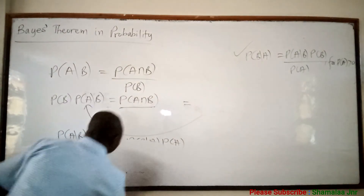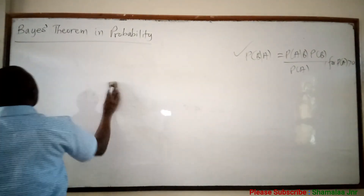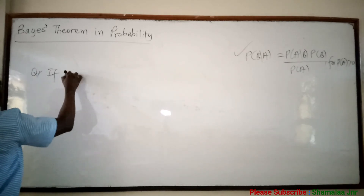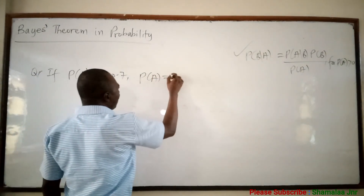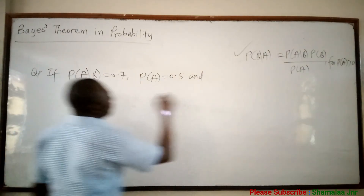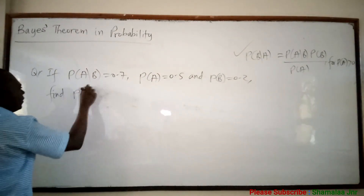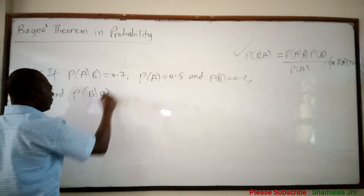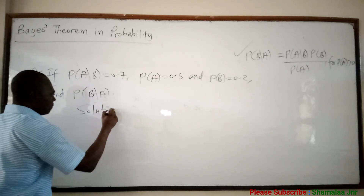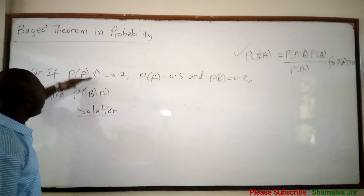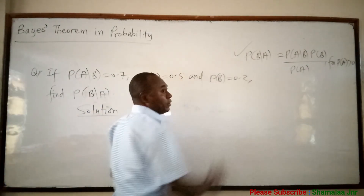Now let's look at a question and bring this lecture to an end. You are given that probability of A given B equals 0.7, probability of A equals 0.5, and probability of B equals 0.2. Find the probability of B given A. You have been given P(A|B), P(A), and P(B), and you have to find P(B|A), so you use the Bayes' theorem formula directly.